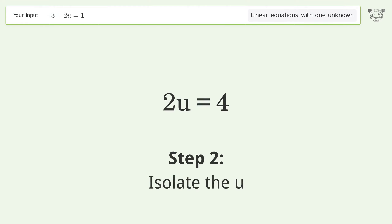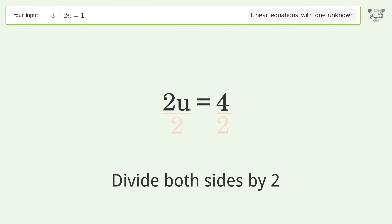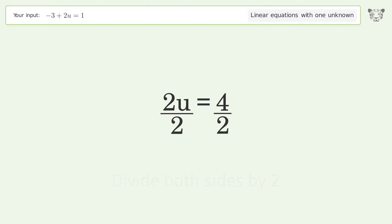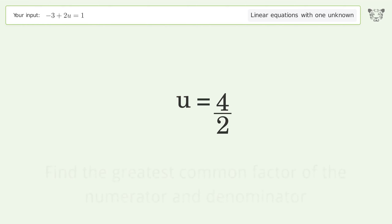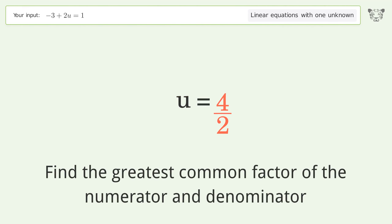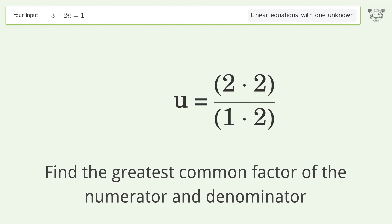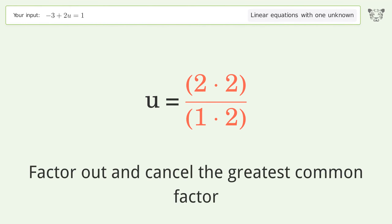Isolate the u — divide both sides by 2. Simplify the fraction. Find the greatest common factor of the numerator and denominator. Factor out and cancel the greatest common factor.